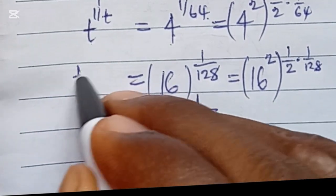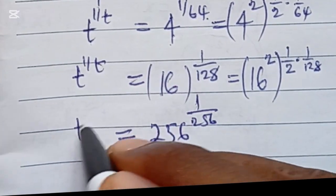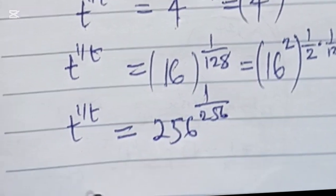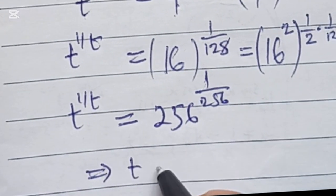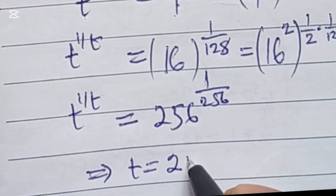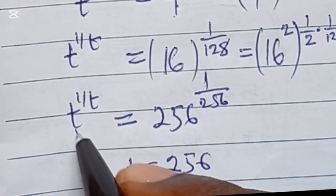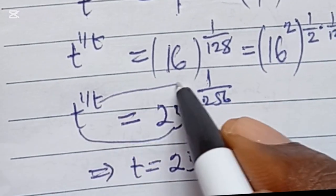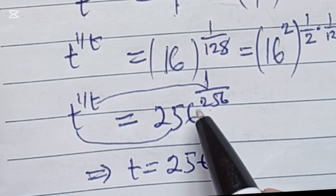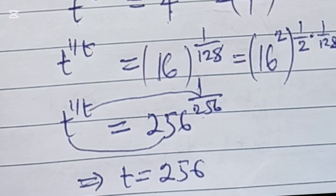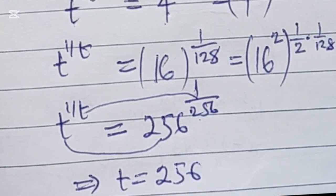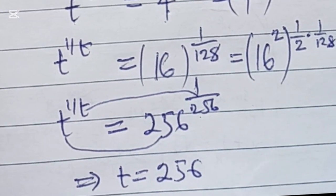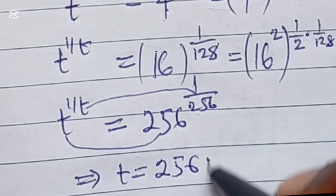You can see this has already been written in the form of the left-hand side, so we can easily see that t is equal to 256. Because t equals t, and 1 over t here is also equal to 1 over 256. This completes the equation. This method can be applied to many other problems like this. Thank you for checking out the video.